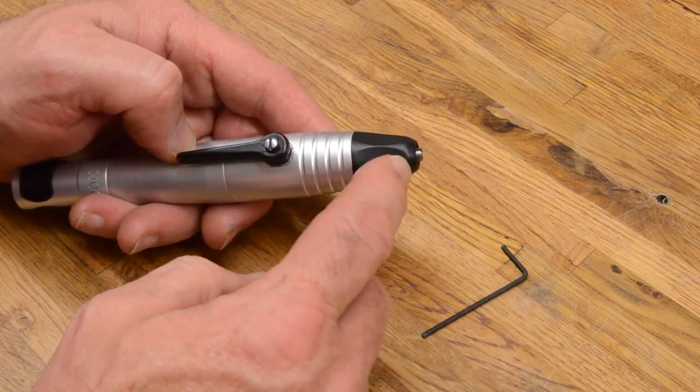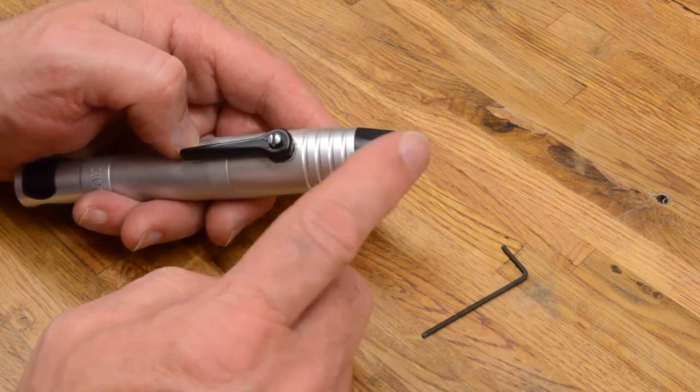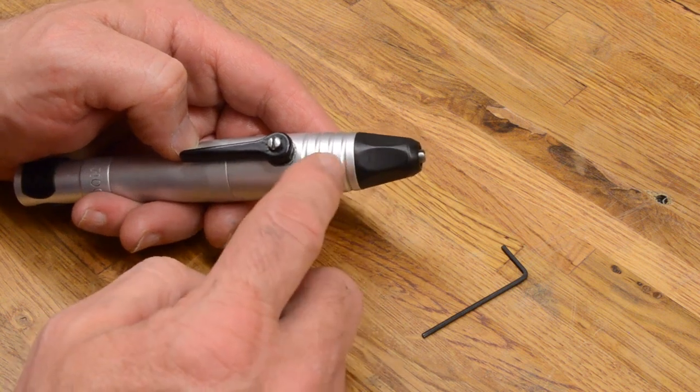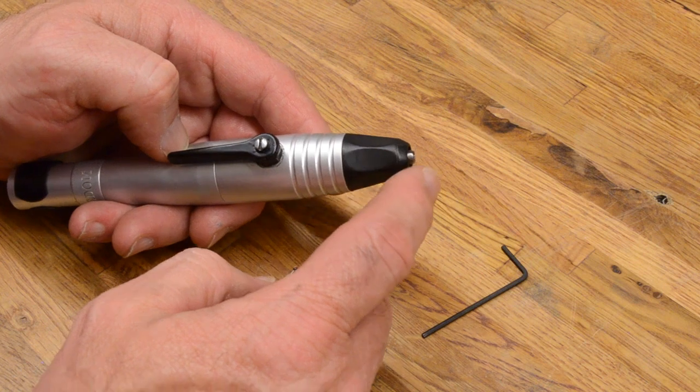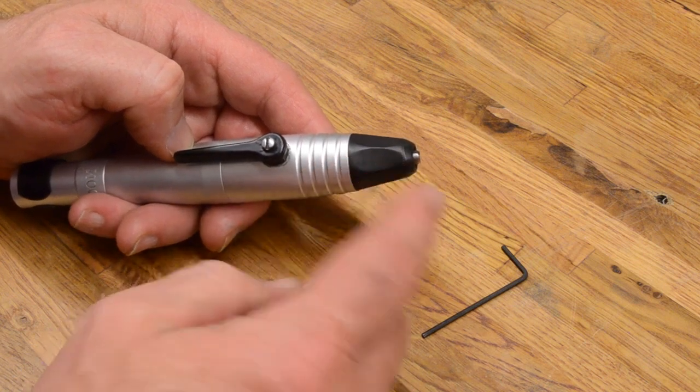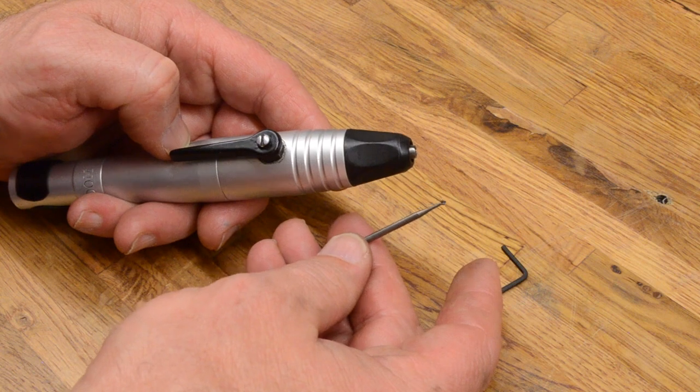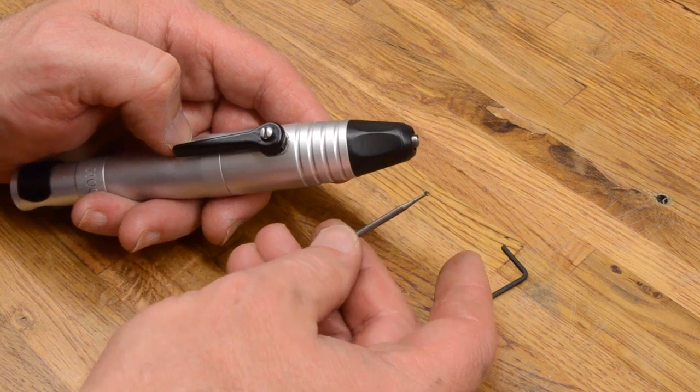Another thing is there's a small set screw in the collet, and I'll show you that here in a minute, that can back off a little bit, causing your collet to back out, and then that would cause the collet to not hold on to the burr as securely as it should either.